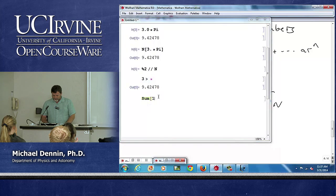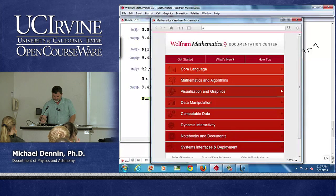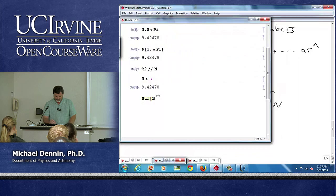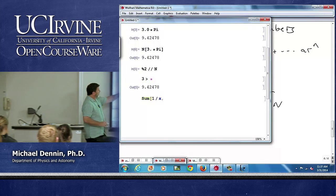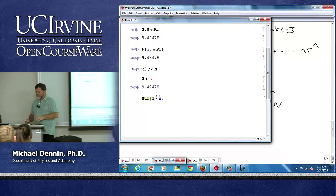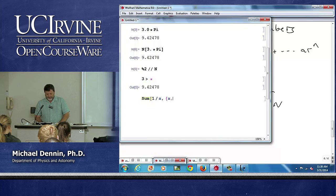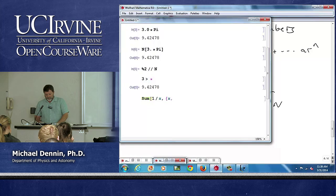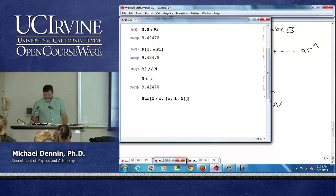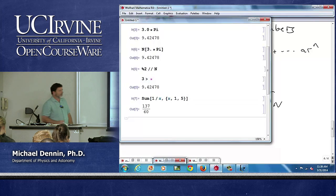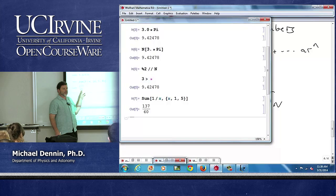Let's just say I wanted to sum one over x. I put it in brackets, tell it that x is what I'm summing over, and I'm going to go from one to five. So that will add five terms together and it gives me the answer, 137 over 60.